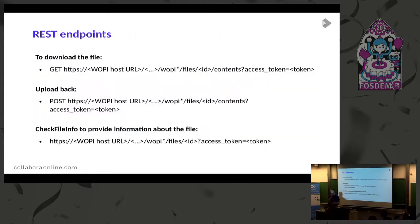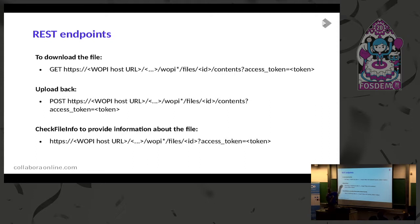There are two things: there's a WOPI source which effectively defines the file or the stream and its version. And then there's an authentication token. We do a POST into the iframe that sends those two things separately. Then to get a file, we call a GET on your storage - we do a web GET. And we pass these credentials back and you decide. To save, we do a POST.